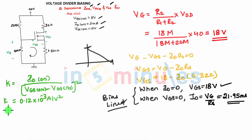Since you know the value of K, the equation for ID is K into VGS minus VTN the whole square, which is the threshold voltage. K is 0.12 into 10 raised to minus 3, VGS minus 5, the whole square.